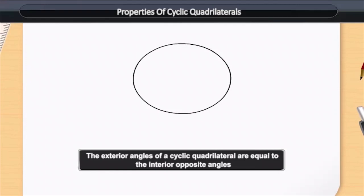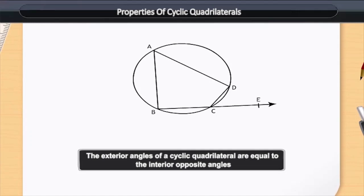To understand this property, let us draw a cyclic quadrilateral ABCD. Draw the line BC up to point E and consider angle A as 50 degrees, through which angle DCE is the exterior angle of the cyclic quadrilateral and angle BAD is an interior angle. Therefore, as per the second property of a cyclic quadrilateral, angle DCE is equal to angle BAD, or in other words, angle DCE is equal to 50 degrees.